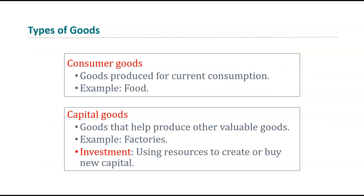We can think about the short-run and the long-run and what we do in terms of two different types of goods in each time period or time horizon. There are consumer goods — those are the goods produced for our current consumption. Food, the things you produce today and you sell today, you produce today and you use today.